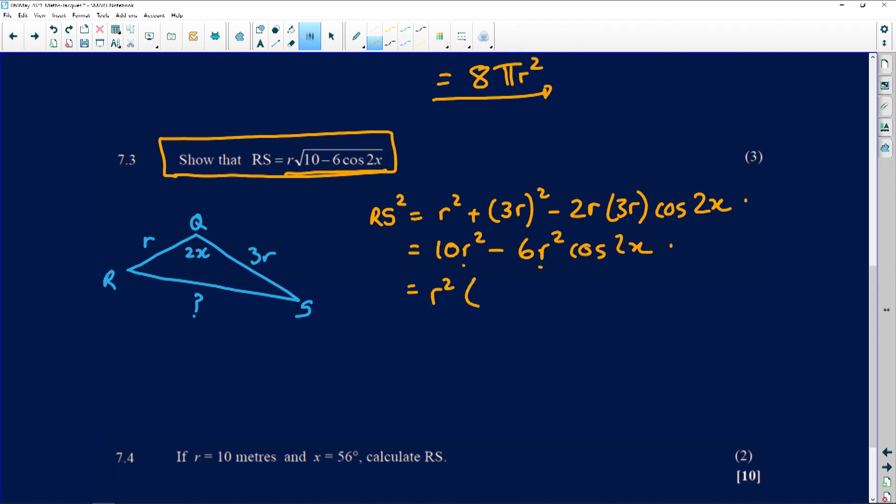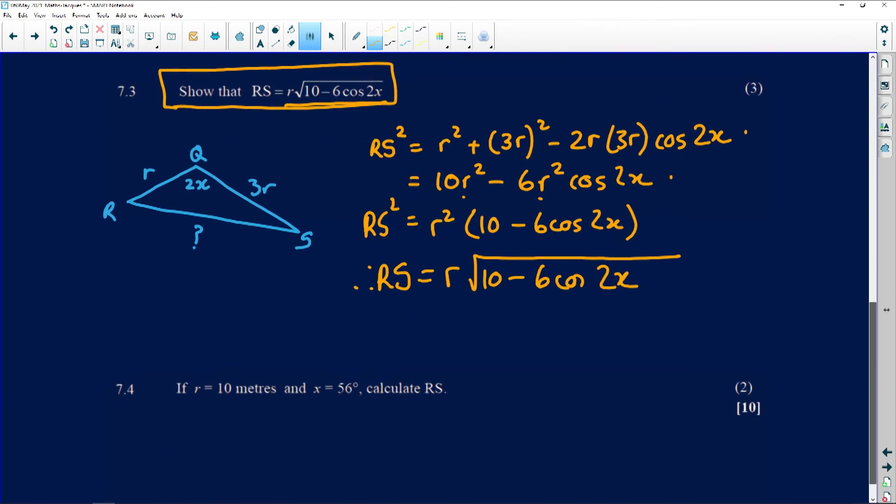If I add, I get 9 plus 1 is 10r squared minus the 6r squared cos 2X. And the only thing I can remove that's common there that will make me get to the answer is my r squared. So I've got 10 minus 6 cos of 2X as RS squared. And folks, if I take the square root, square root of r squared is r times the root of 10 minus 6 cos 2X.